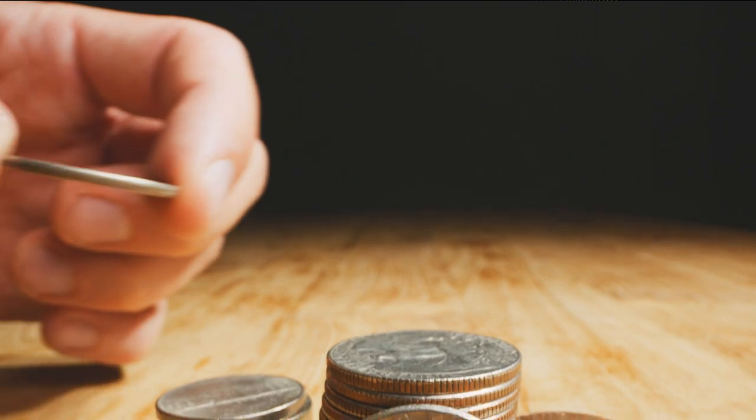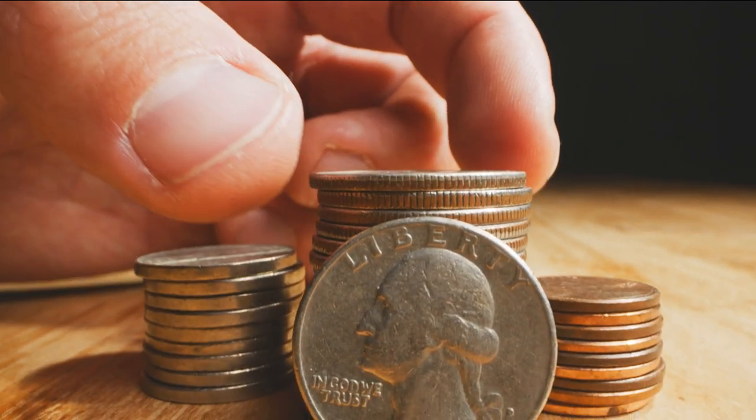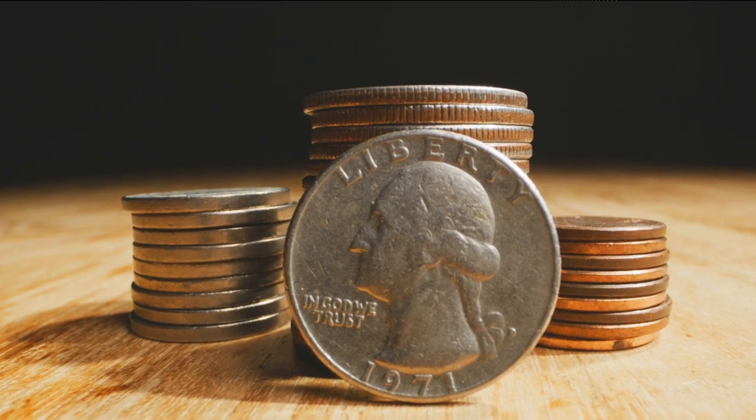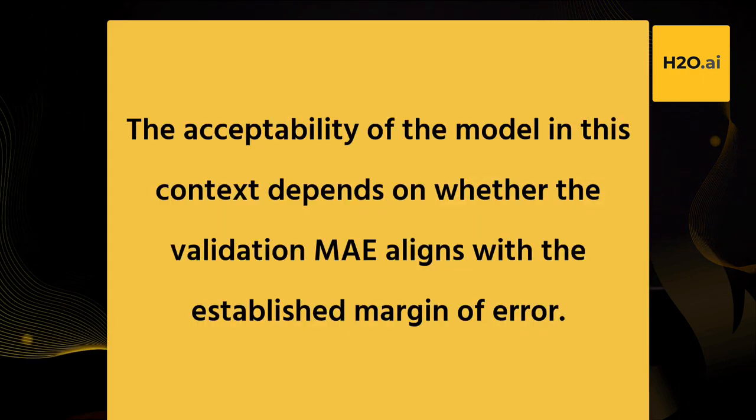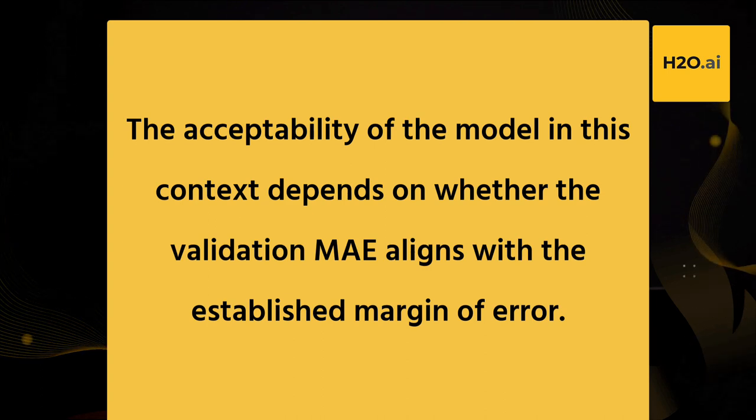Use case 2: suppose that another objective is to obtain a rapid approximate sum of many coins using the built model. To determine the model's acceptability in this scenario, we first need to establish an acceptable margin of error for the rapid approximation. If the validation MAE of our built model falls within the defined acceptable margin of error, we can consider the model acceptable and well-performing for this use case. This means the model's predictions, while not exact, are within the acceptable range, and its acceptability depends on whether the validation MAE aligns with the established margin of error.